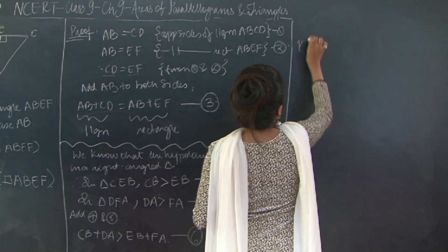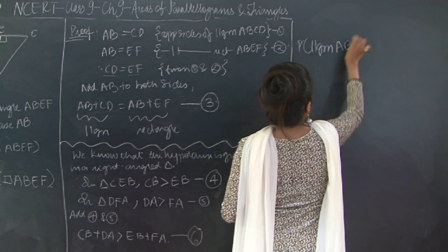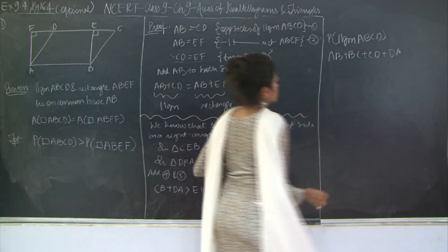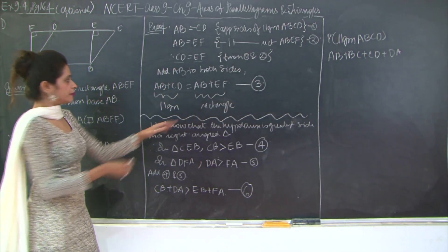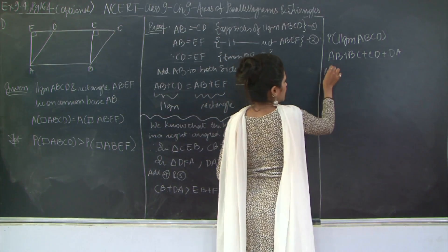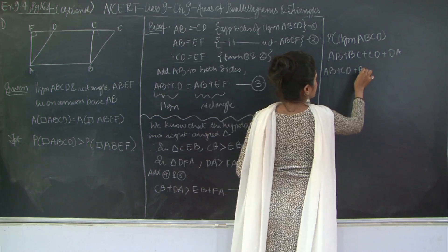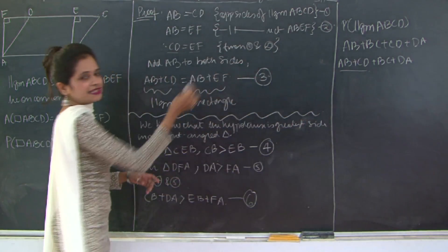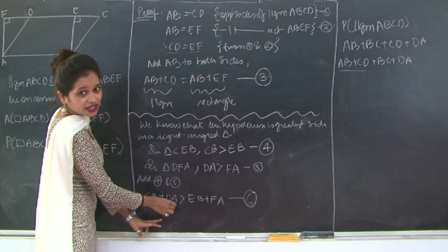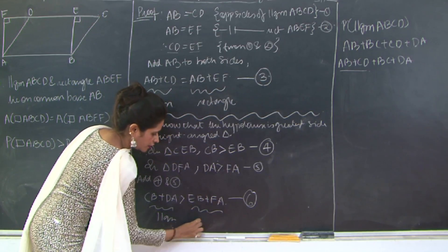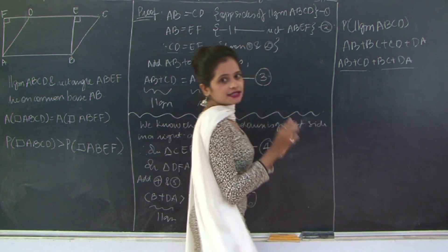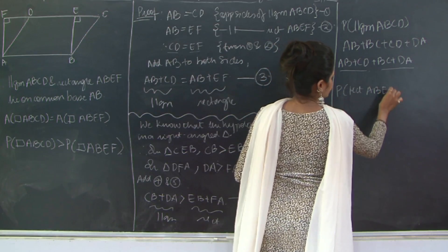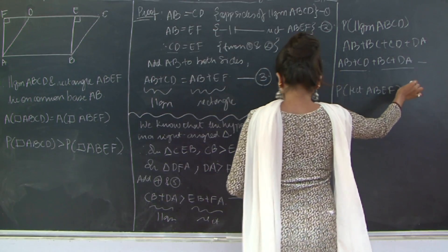Perimeter of parallelogram ABCD equals AB plus BC plus CD plus DA. Rearranging: AB plus CD (the sum of the lengths) plus BC plus DA (the sum of the breadths). Mark this as 7. Perimeter of rectangle ABEF equals AB plus BE plus EF plus FA. Rearranging: AB plus EF (sum of lengths) plus BE plus FA (sum of breadths). Mark this as 8.